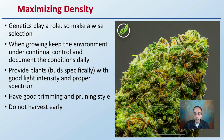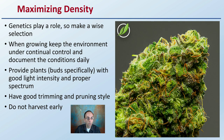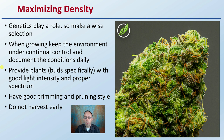When maximizing density, genetics do play a role, so make a wise selection at the very early part of the process. When growing, keep the environment under continual control and document the conditions daily — you want to have good records of your growing area. Provide the buds with good light intensity and the proper spectrum if you're growing indoors.